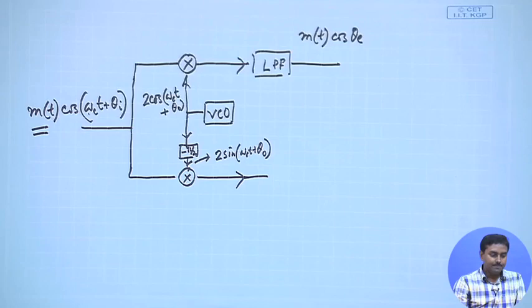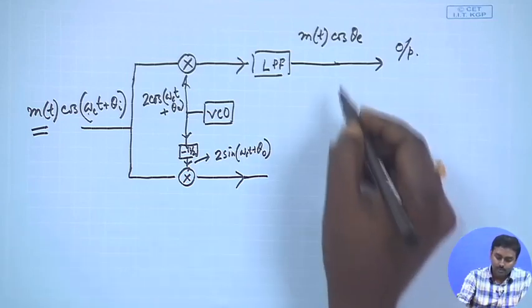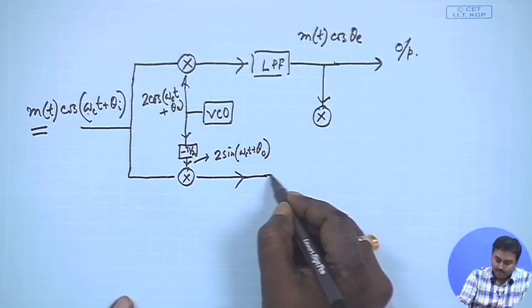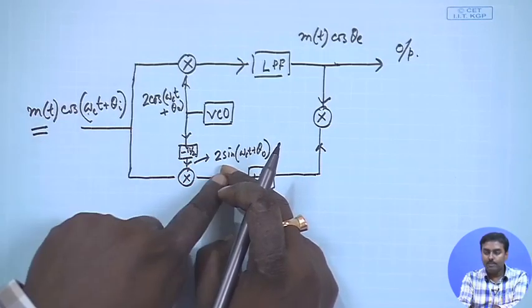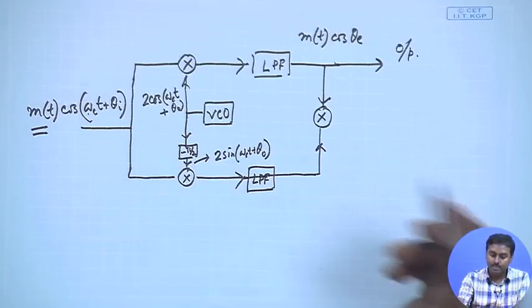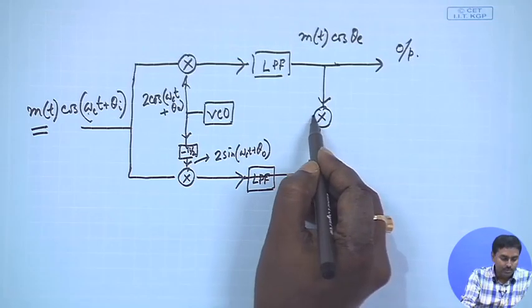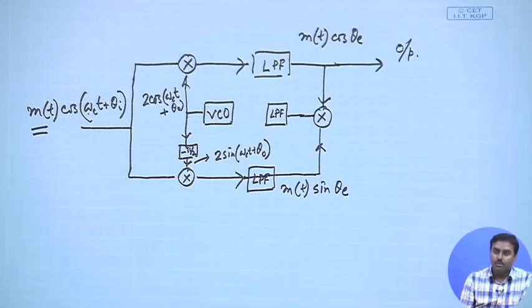This m(t)·cos(θe) is the output and we need feedback. We take it and put another multiplier circuit - this is almost working like a squaring circuit. There should also be a low pass filter here. Since we have cosine multiplied by sine, we get sin(a+b) and sin(a-b), and sin(a-b) will survive, giving m(t)·sin(θe). This is passed through a very narrow band low pass filter around DC.